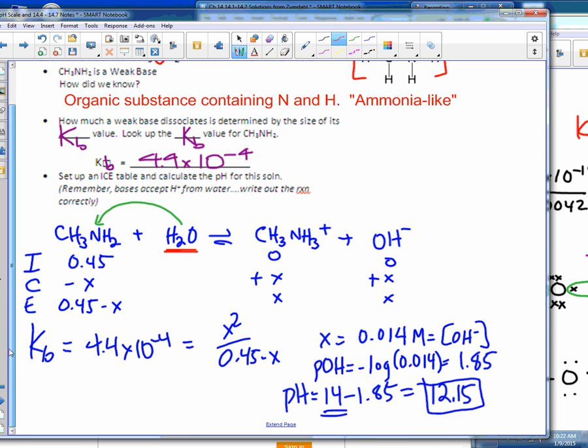The ICE table, though, looks very similar. 0.45 minus x plus x plus x. And, then to solve, you got your Kb. Did you label it? Make sure it's labeled. X squared over the 0.45 minus x. Solve for x, but keep in mind that that x value represents the hydroxide. It equals the hydroxide ion concentration. So, when you take the negative log of that, that's the pOH. So, to get the pH, you have to subtract that from 14. 12.15.